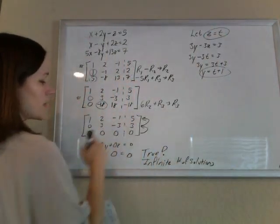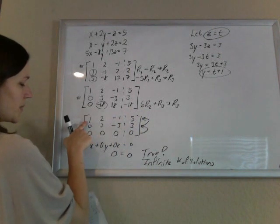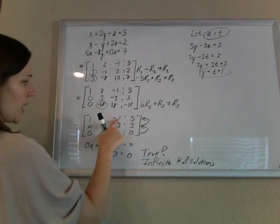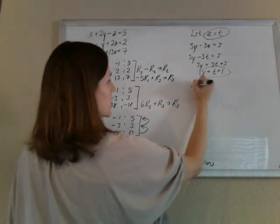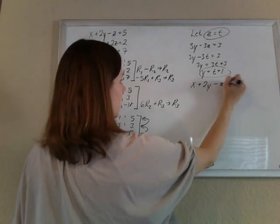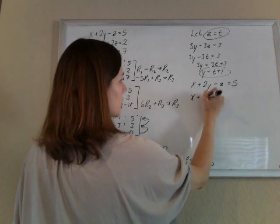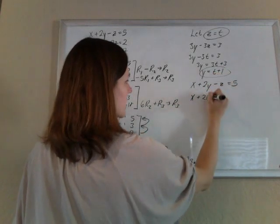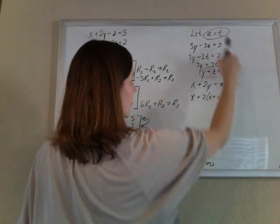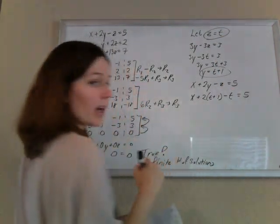Now we're just going to bounce it back up to this first row. And this means that x plus 2y minus z equals 5. So x plus 2y minus z equals 5. So I'll have x plus 2. And the y is t plus 1. And the z is t. And that equals 5.